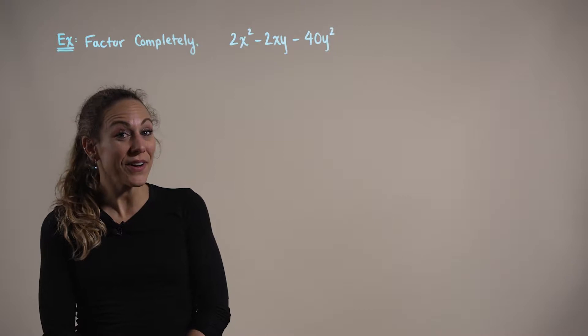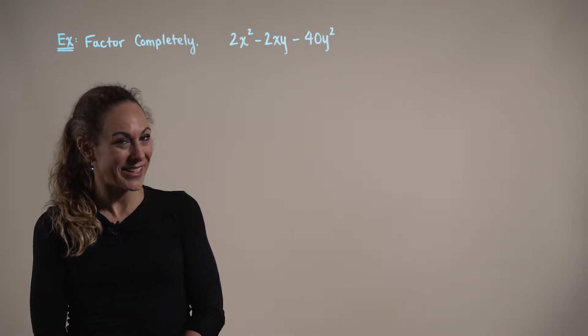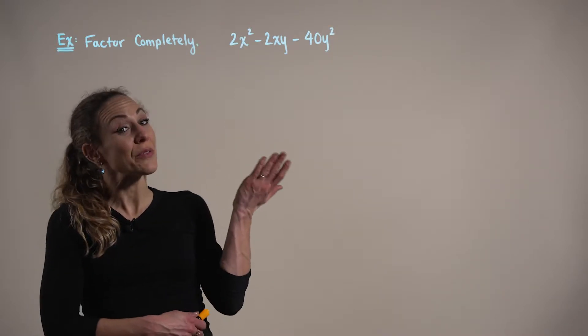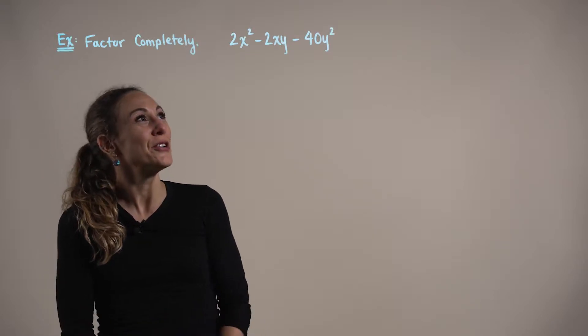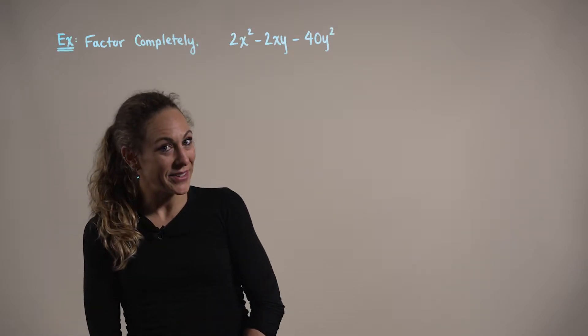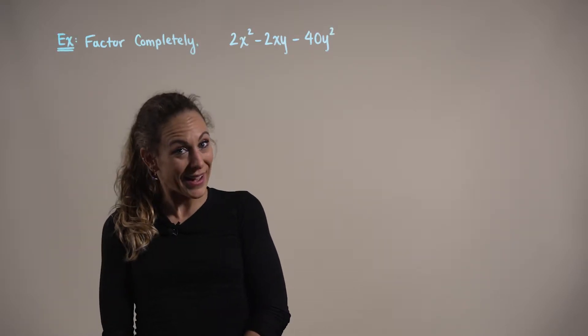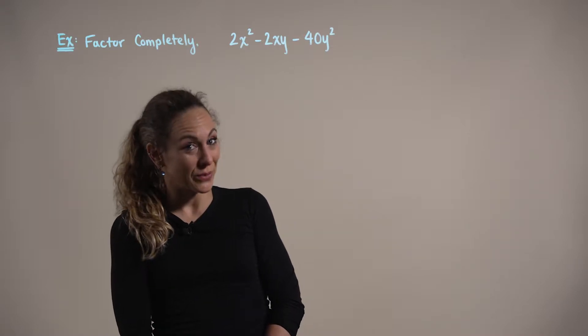In this example, we are asked to factor completely. We are given a trinomial polynomial expression 2x squared minus 2xy minus 40y squared.